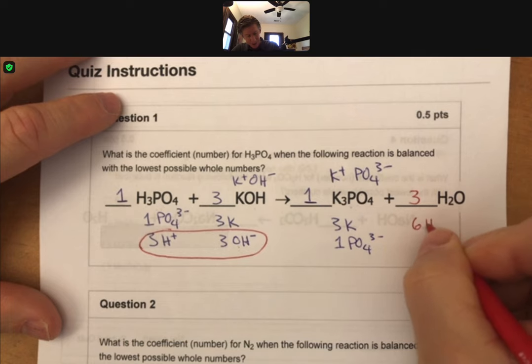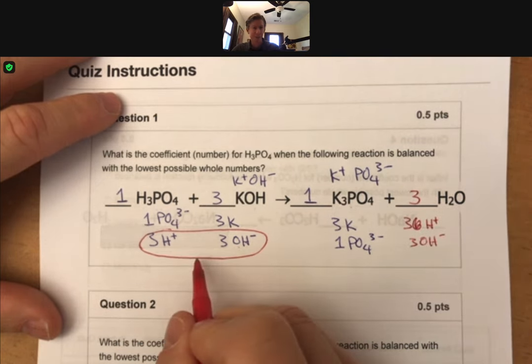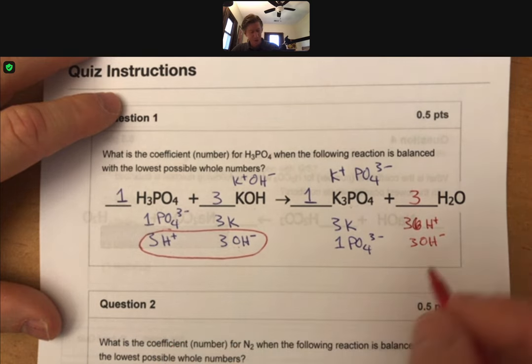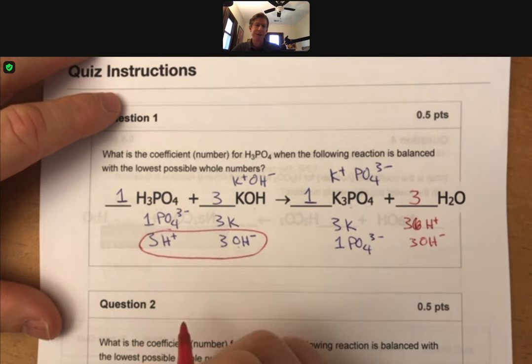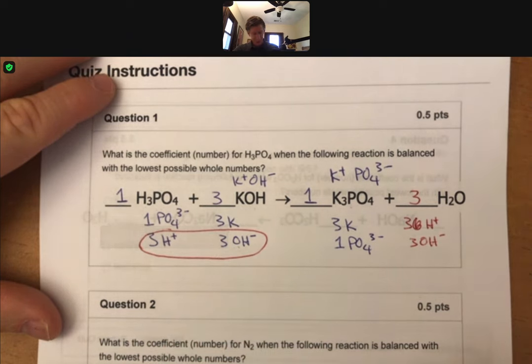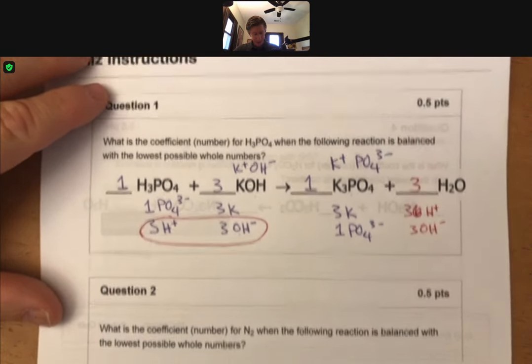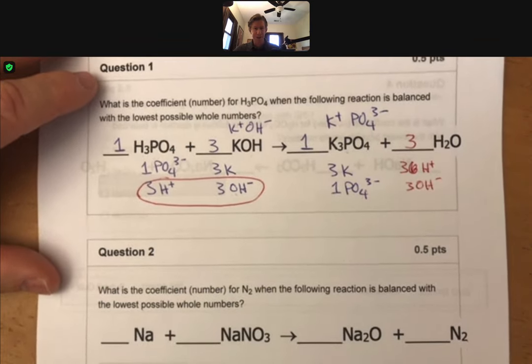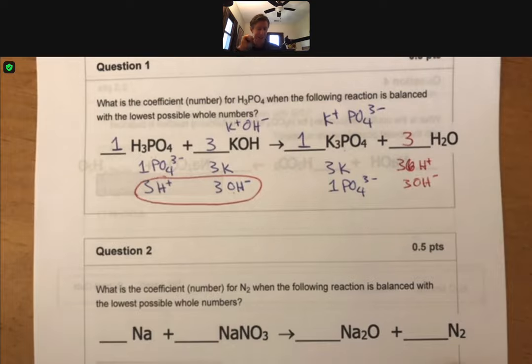It could be 3 H+ and 3 OH⁻, since you just put them together. Or it could be 6 H's and 3 O's, depending upon how you do it. But it'll still balance there. That's the first one. And that's a pretty good example of how you're going to balance things.